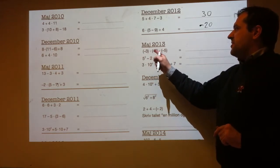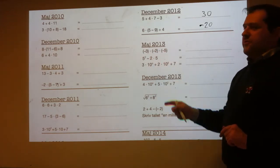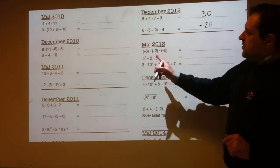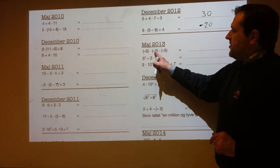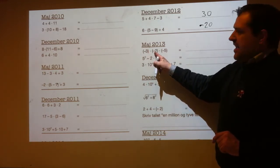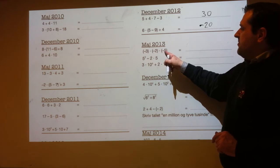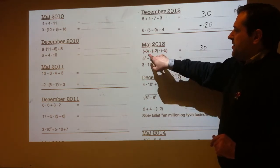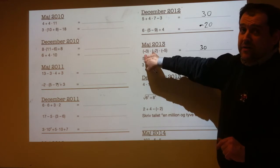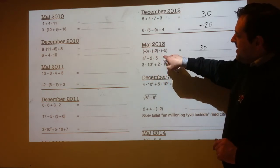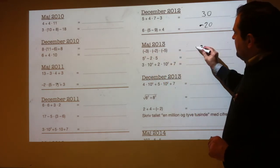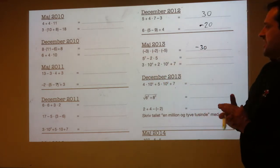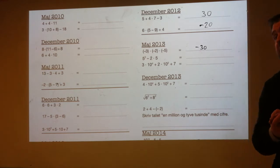Minus 3 times minus 2 times minus 5. 3 times 2 is 6, and 6 times 5 is 30. Minus times minus makes plus, but then times minus again makes it minus again. So it's minus 30.